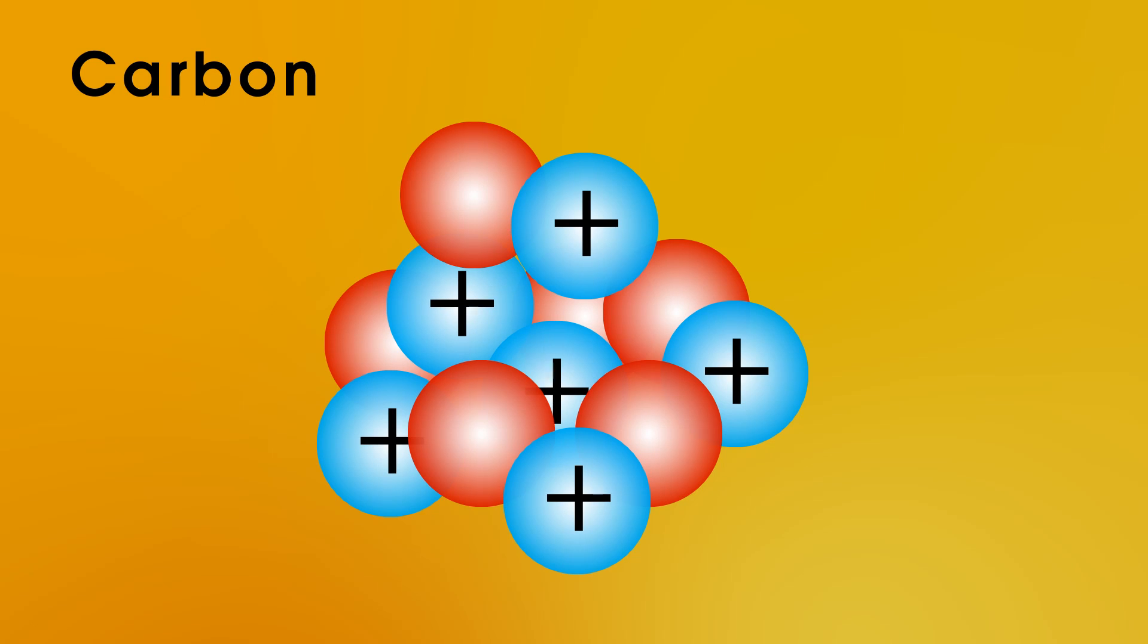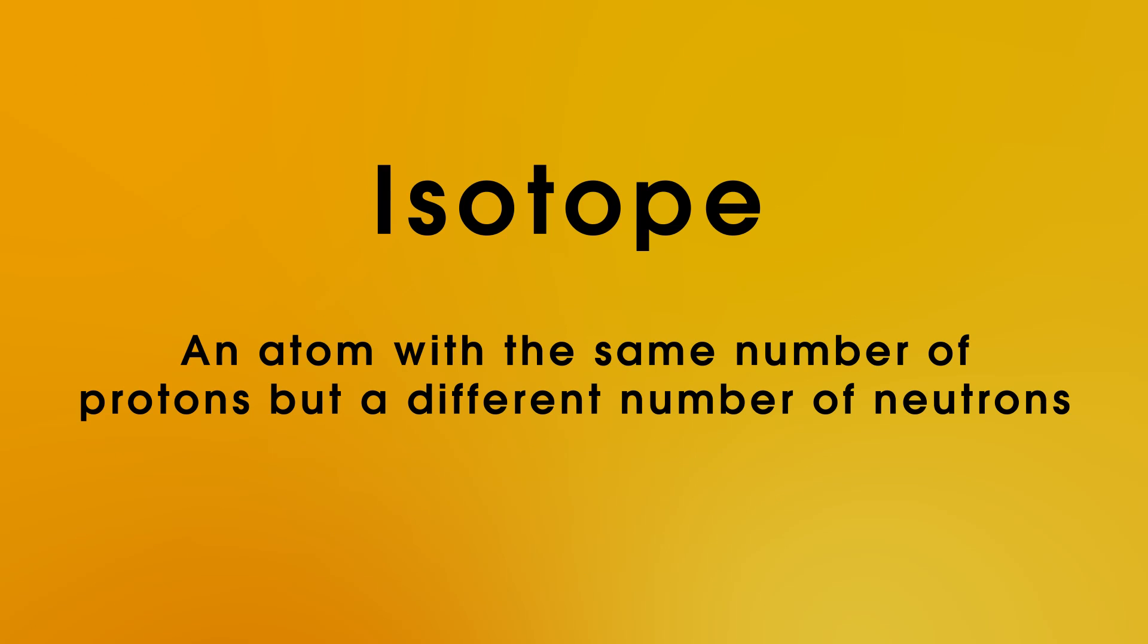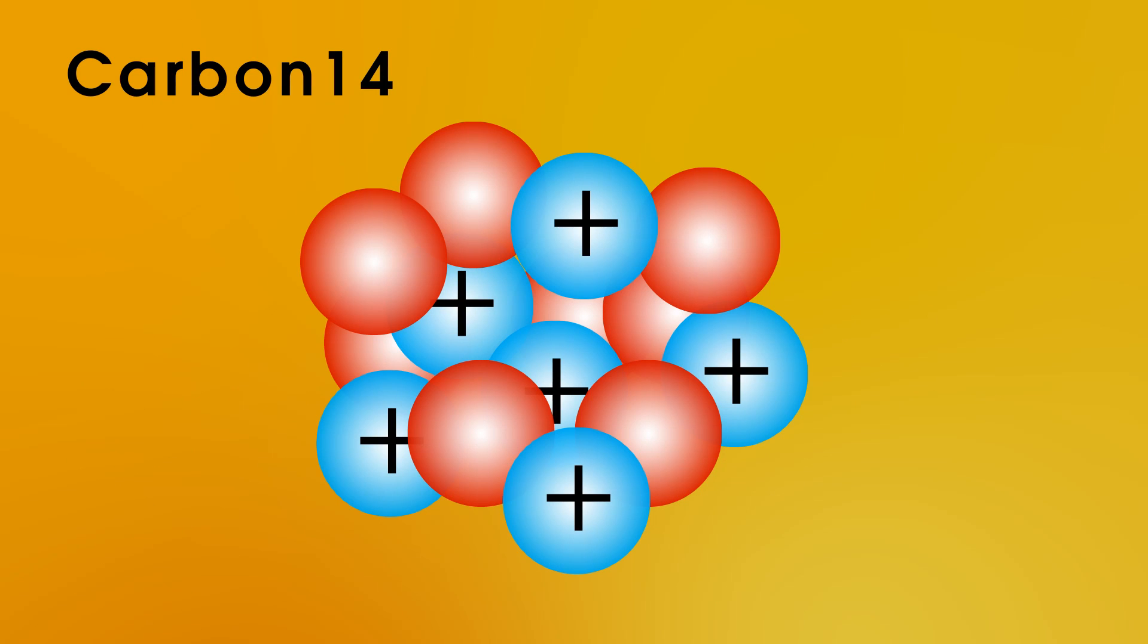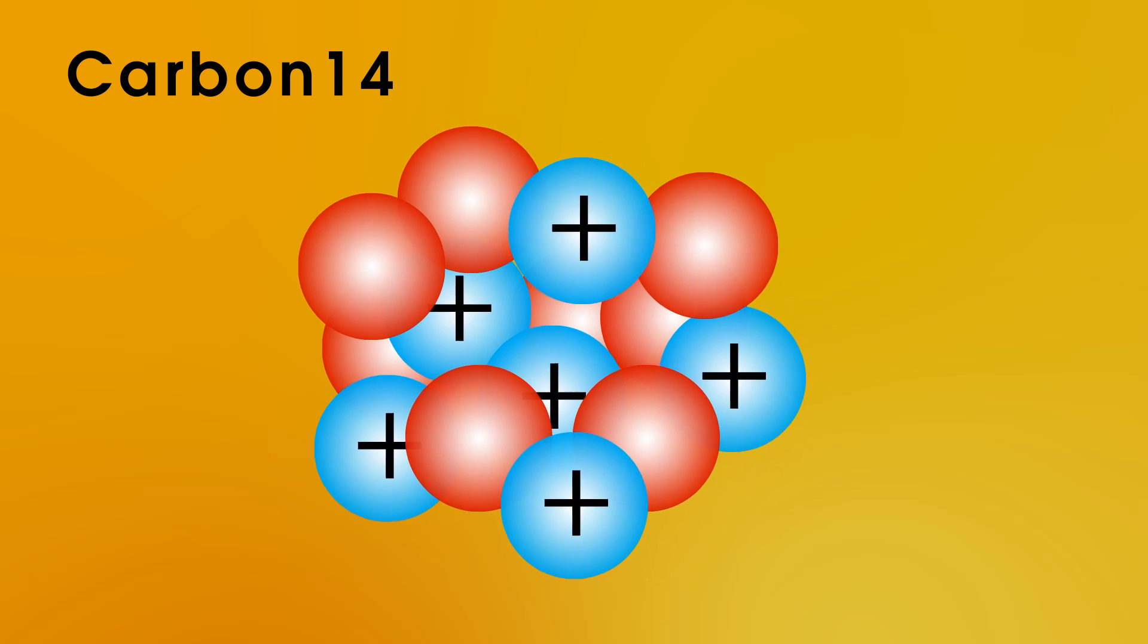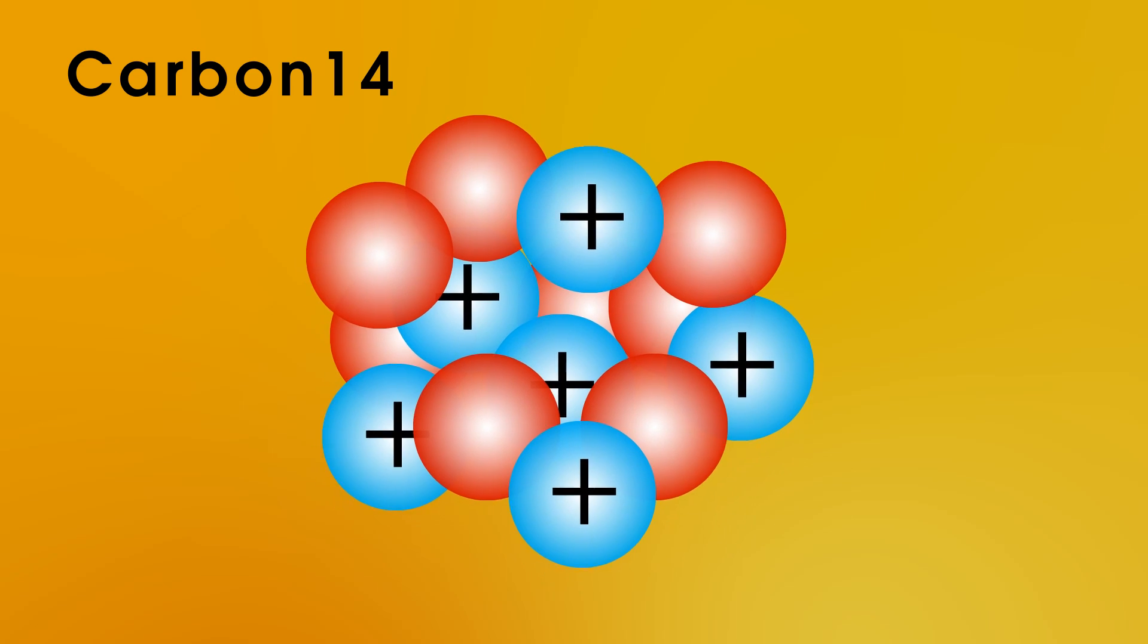However, carbon can also exist with 6 protons and 8 neutrons. This is an isotope of carbon. An isotope is a version of an element with the same number of protons, but a different number of neutrons. This new isotope of carbon, carbon-14, is unstable. The balance of protons and neutrons is wrong, and it wants to adjust this.